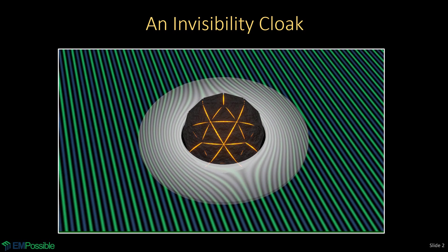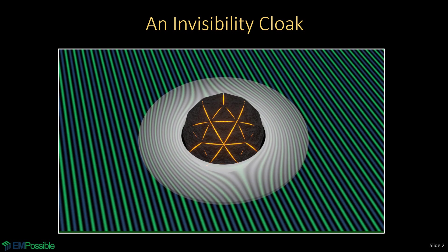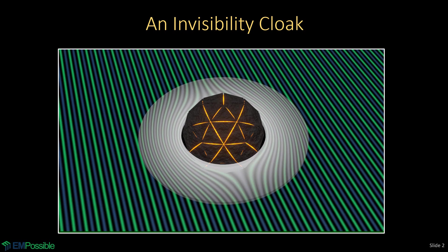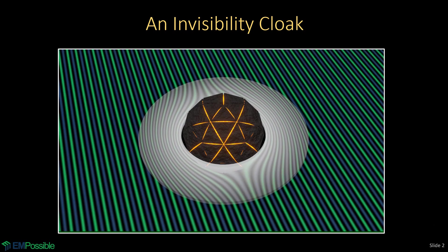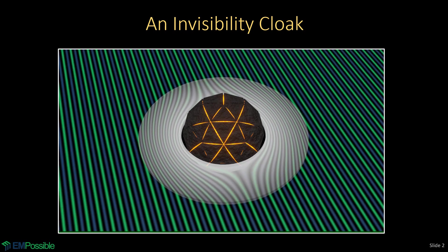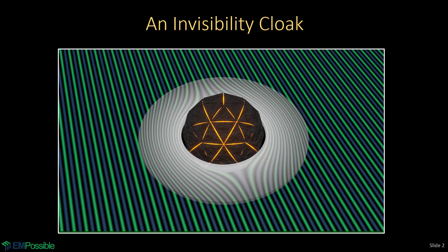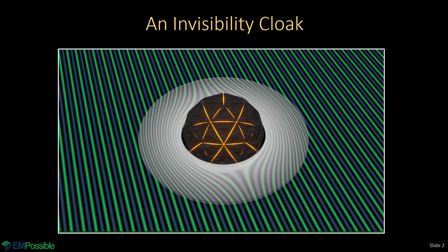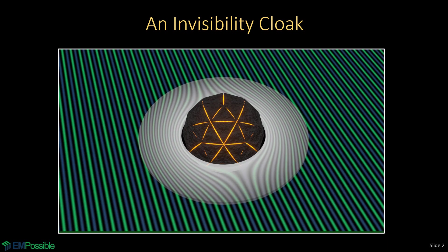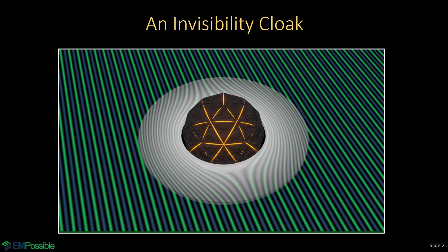Now of course, this requires that whatever's inside that invisibility cloak manipulates the wave in the right way. But the whole idea of an invisibility cloak is: nice flat wave coming in, nice flat wave coming out.